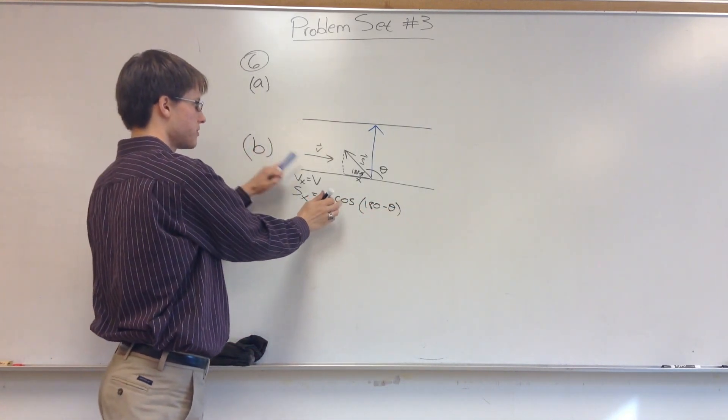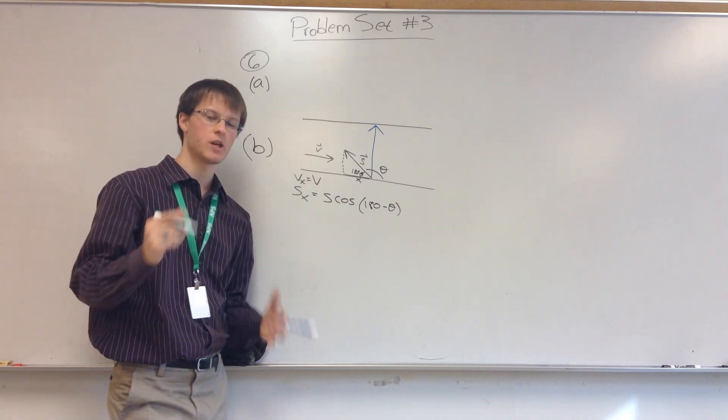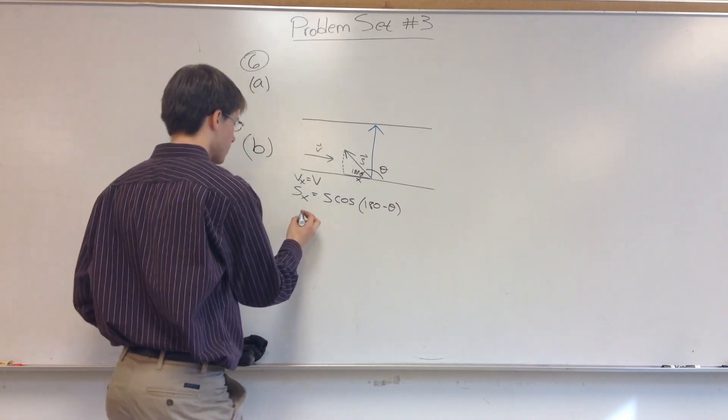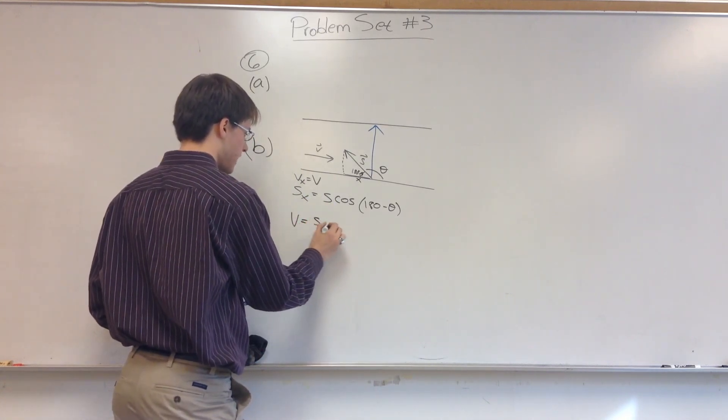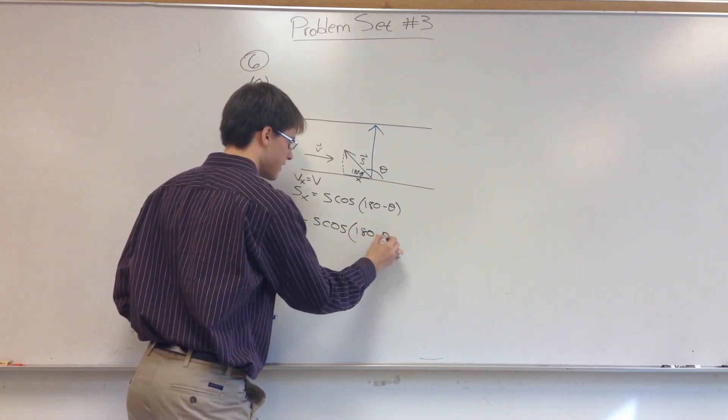So we want these two things to be equal to each other, equal and opposite. So we're going to say that V is equal to S times the cosine of 180 minus theta, and we're going to solve for theta.